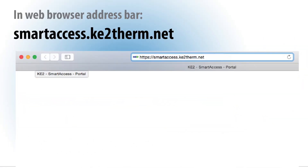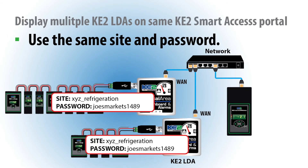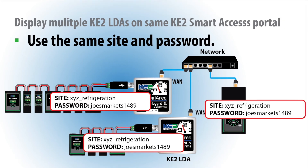Clicking on the arrow next to your portal name, or entering smartaccess.ketotherm.net in your web browser, will take you to the site. To add additional Keto LDAs or individual controllers to the same portal, simply set them to the exact same site and password information.